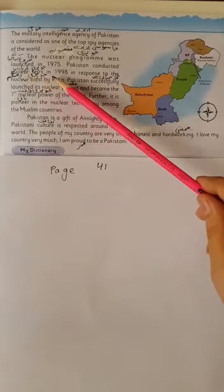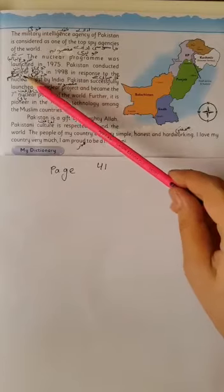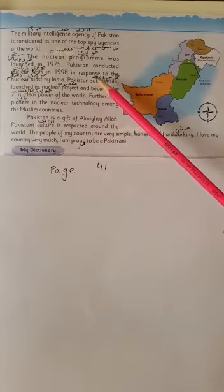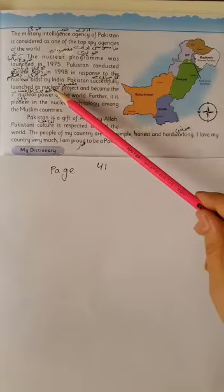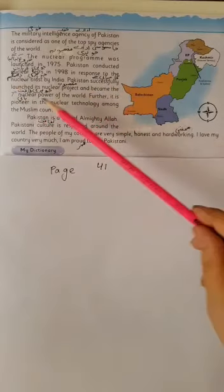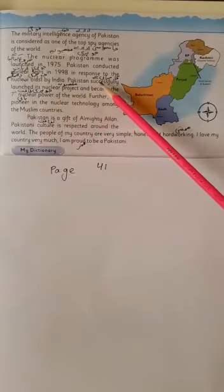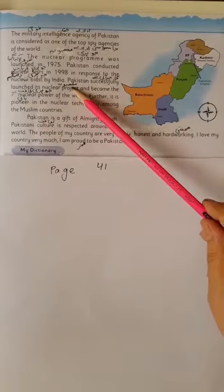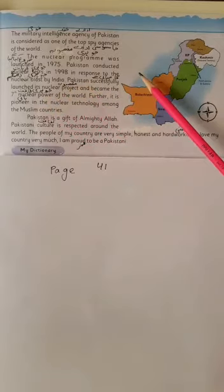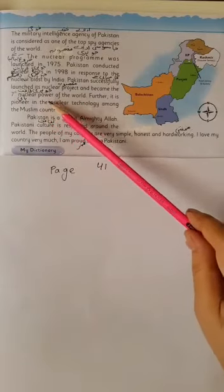Pakistan conducted nuclear tests in 1998 in response to the nuclear blast by India. Nuclear tests: johri tajurbat. Nuclear blast: johri dhamaka. Pakistan ne Bharat ke johri dhamakoon ke jawab mein 1998 mein johri tajurbat kiye. Pakistan successfully launched its nuclear project and became the 7th nuclear power of the world. Successfully: kamyabi se. Nuclear power: johri taaqat. Pakistan ne kamyabi se johri mansoobah ka aaghaz kiya aur duniya ki saatwin johri taaqat ban gaya.